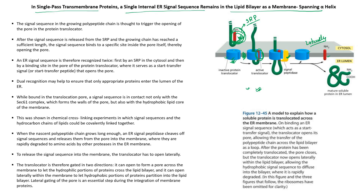The translocator opens in two directions: first, across the membrane, and second, along the membrane — that is, in the lateral direction. The opening across the membrane allows hydrophilic polypeptide chains to enter into the lumen of the endoplasmic reticulum.